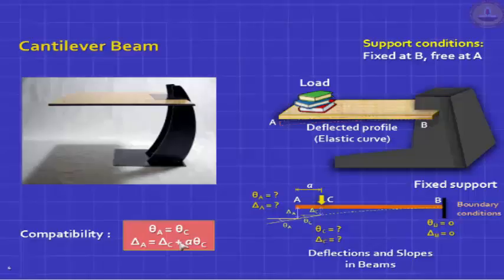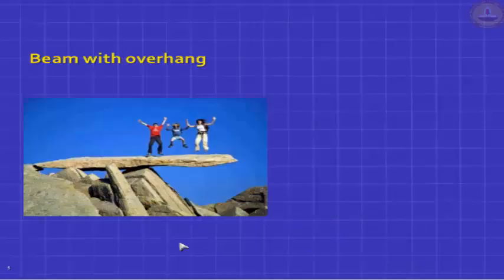Here is another good picture — happy people jumping on an outcrop of rock, a simply supported beam with an overhang. The overhang part looks like a cantilever. It has its own self-weight and three people jumping on top. When they land on it, hopefully it will remain stable.